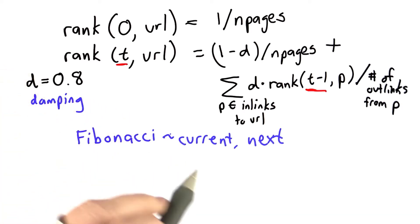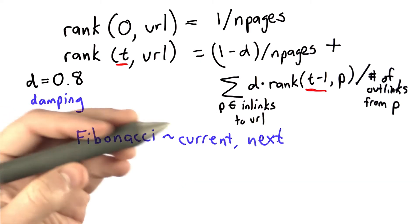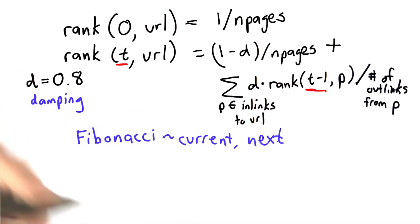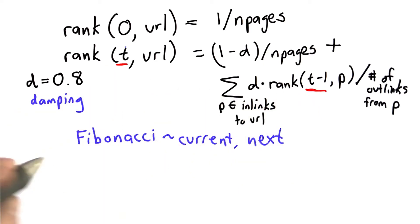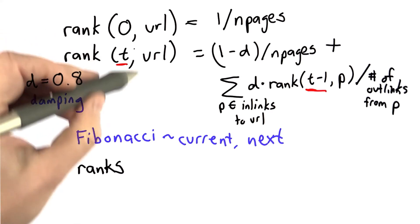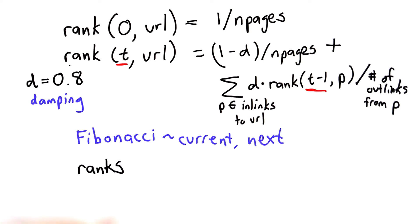When we did Fibonacci, we kept track of current and next in variables. And that allowed us to keep track of the previous and the previous previous Fibonacci numbers. What we want to do with ranks is something similar. So we're going to use the variable ranks to keep track of the current ranks, and as we compute the new ranks, we're going to use the variable newranks.